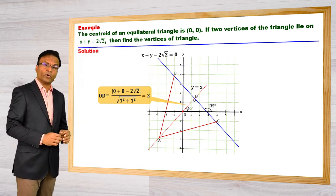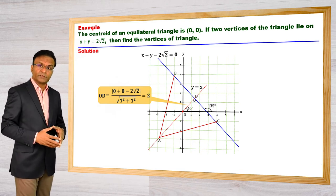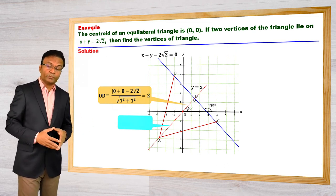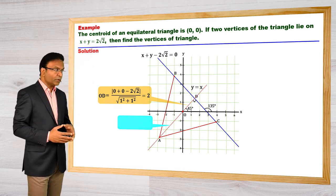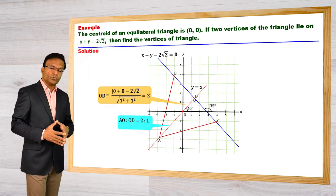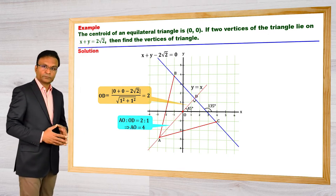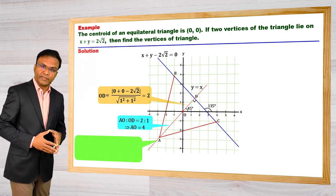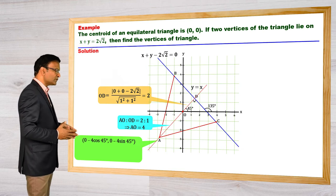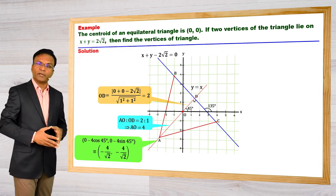We know how to find the distance of a point from a line. Now we can find distance AO using the concepts of median and centroid. O is the centroid, which means O divides AD in the ratio 2:1. So distance AO is equal to 4. Now we can find the coordinates of vertex A, which are given by (0 − 4cos45°, 0 − 4sin45°), giving us (−4/√2, −4/√2).